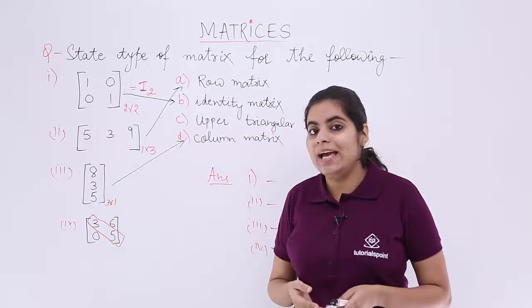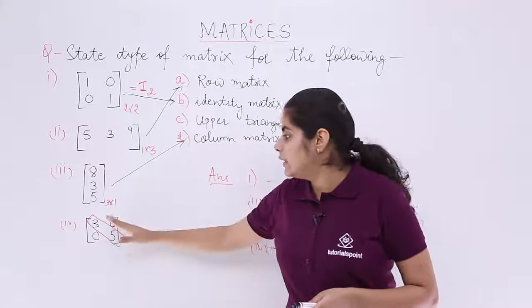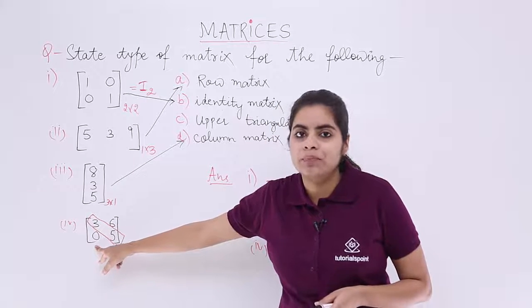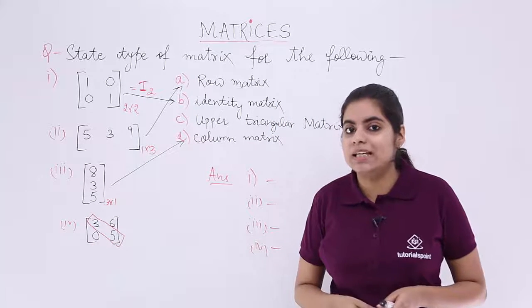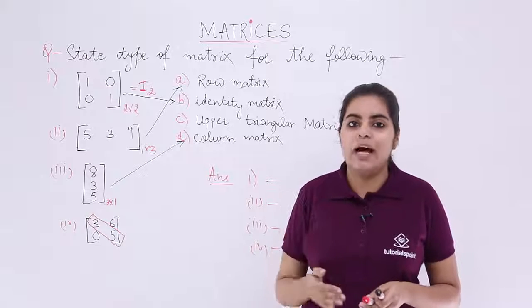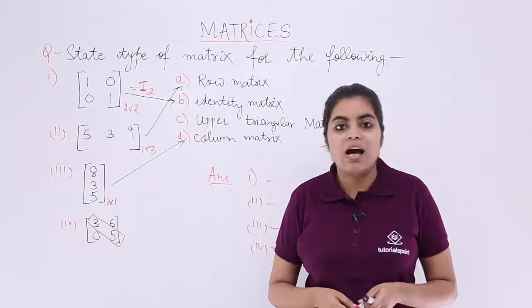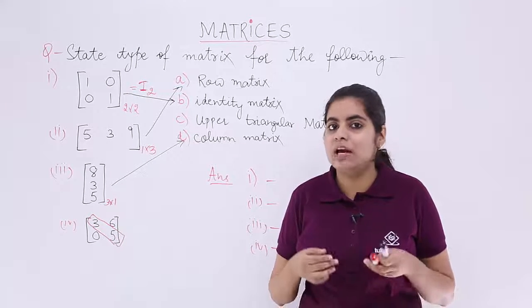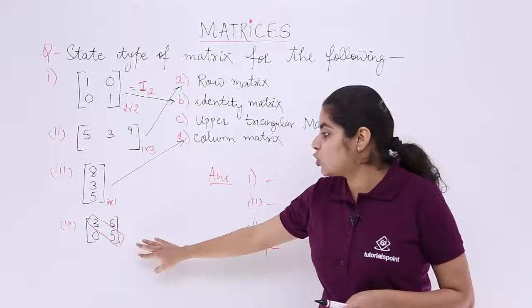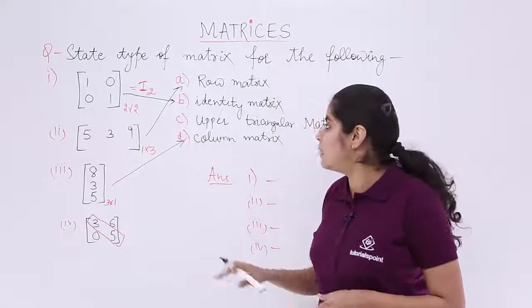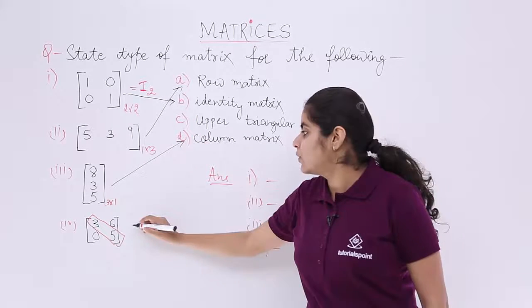And what about the element below the diagonal? The diagonal below is an element 0. Now, in which matrix the case happens that below diagonal we have 0s? It is an upper triangular matrix which we have already seen in the previous videos. So, let's see which option satisfies upper triangular matrix. It is option number C.